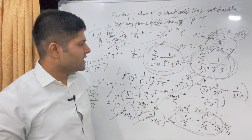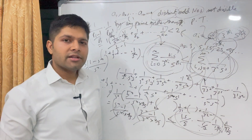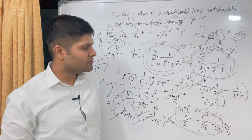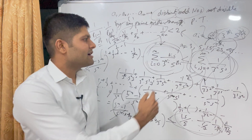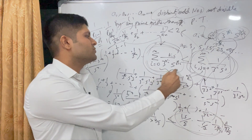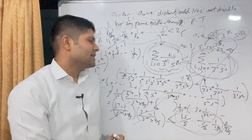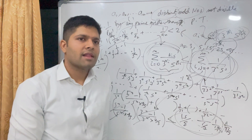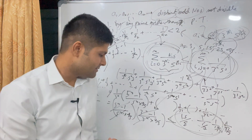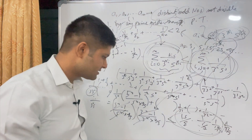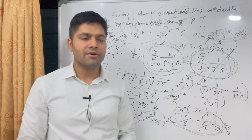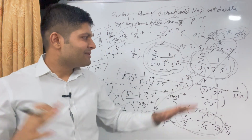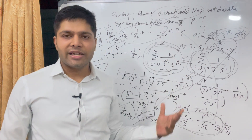Do you think there's a combinatorial proof here? I think there might be a combinatorial approach, where choosing subsets of these numbers can be interpreted combinatorially. I haven't fully worked it out yet — maybe I'll update it in a future video or note. If you come across something like this, please write in the comments.